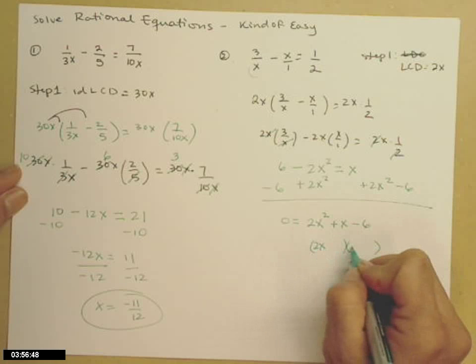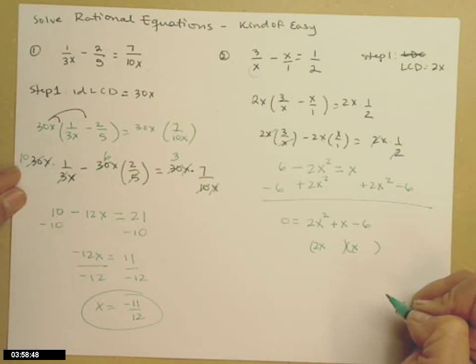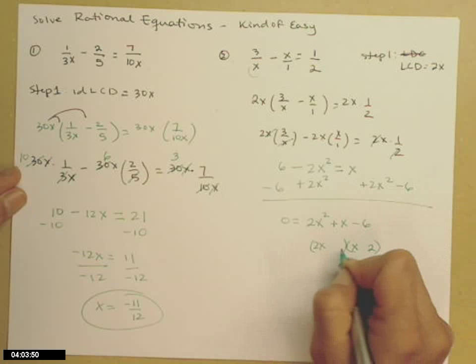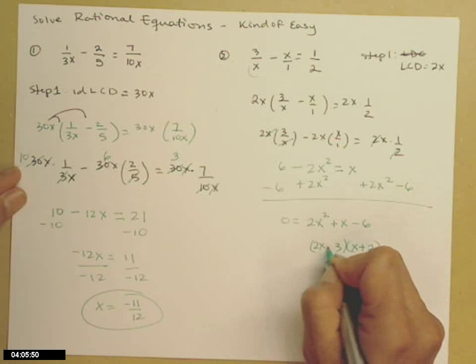The next step is to factor. I'll let you work on that on your own. Let's see, I need to add to 1 from 12, so 2 and a 3 plus minus.